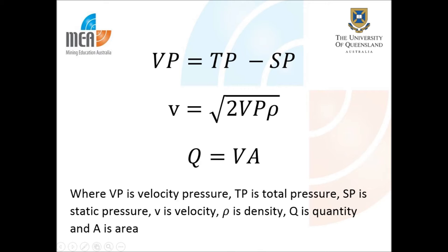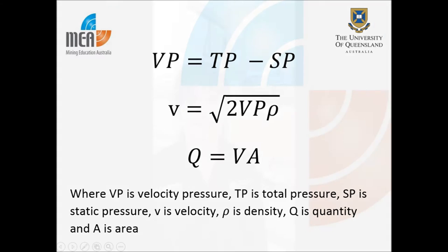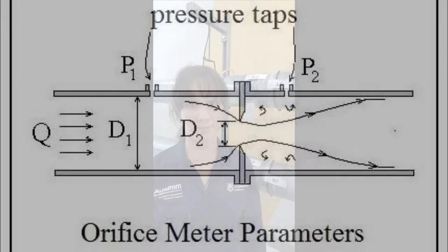The velocity pressure is found from the total and static pressure, the velocity can be calculated from the velocity pressure, and then using the calculated area of the duct the quantity can be found. The second method for calculating the quantity of air is through an orifice plate or regulator. Regulators restrict the velocity of air in a duct by decreasing the area. An orifice plate has a small hole in the middle which causes the velocity and pressure to change in the duct.